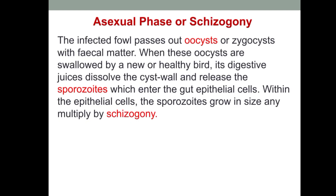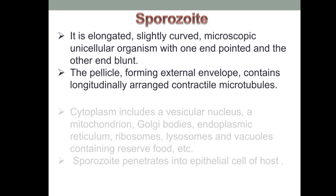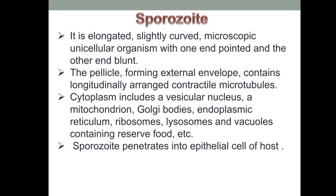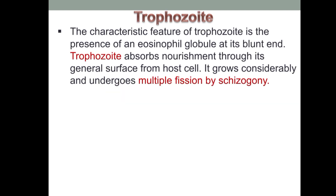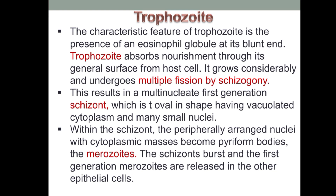In the asexual phase or schizogony, the infected fowl passes out oocysts, which release sporozoites. These sporozoites undergo schizogony by multiplying. The sporozoite is an elongated, curved, microscopic, unicellular organism having a pellicle and contractile vacuole; it also contains Golgi bodies, mitochondria, endoplasmic reticulum, ribosomes, lysosomes, and food vacuoles. Sporozoites penetrate the epithelial cells of the host, change into trophozoites, absorb nourishment through the general surface, grow considerably, and undergo multiple fission by schizogony to form merozoites.